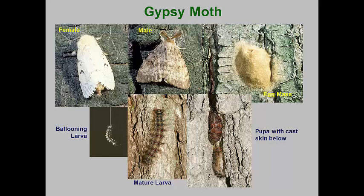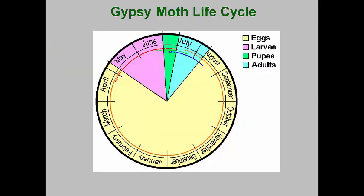Larger larvae have diagnostic blue and red tubercles down their backs. After feeding, the larvae spin loose cocoons in which they pupate. The gypsy moth spends most of the year as eggs in the egg masses. Egg masses can be attached to host trees, rocks, and even landscape chairs, campers, and other items located where the adult females are.